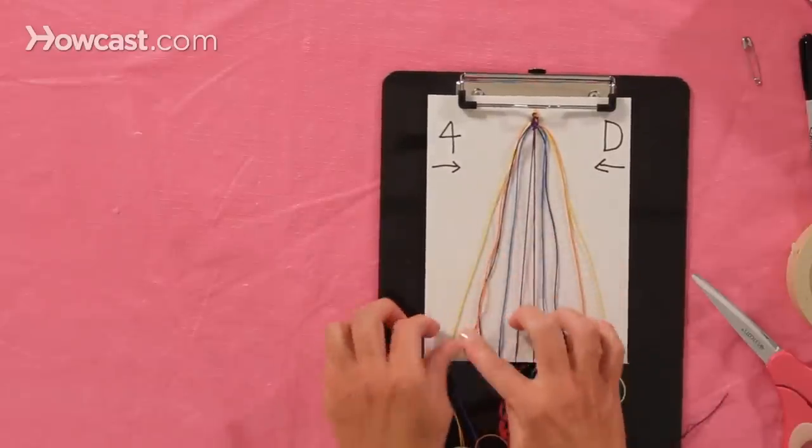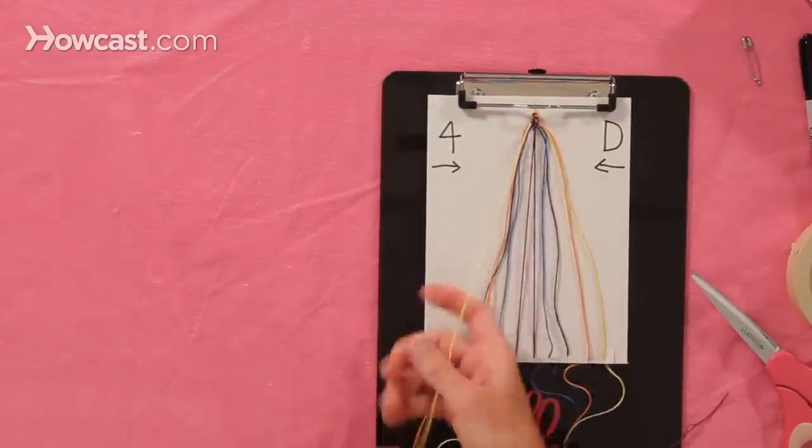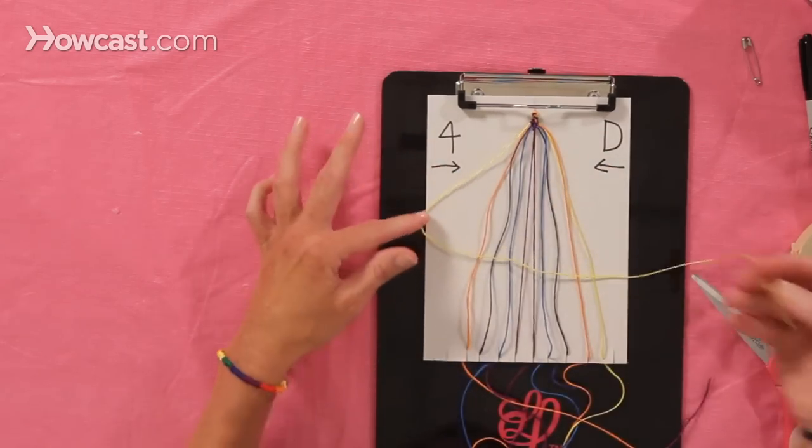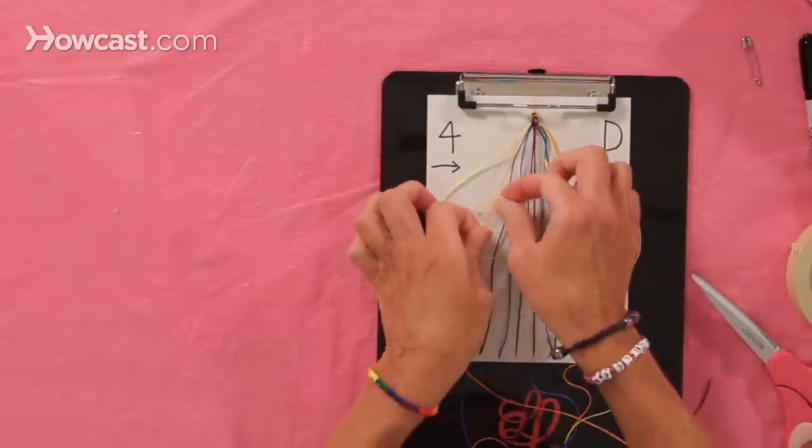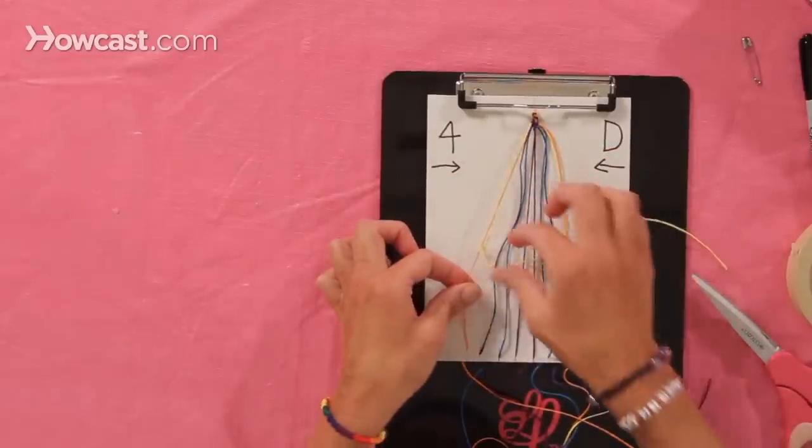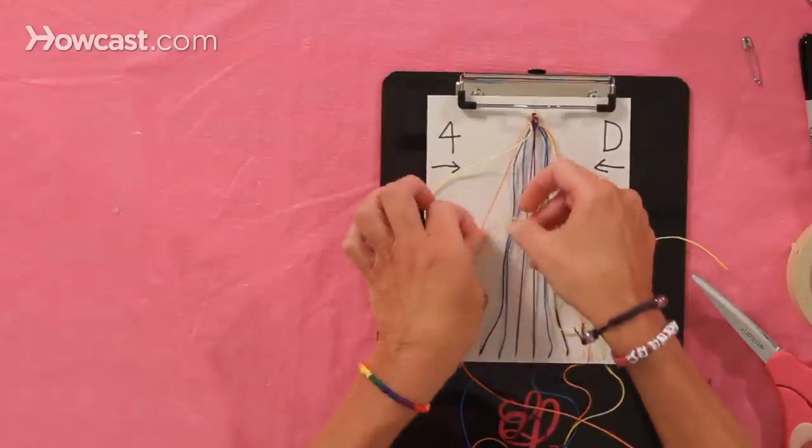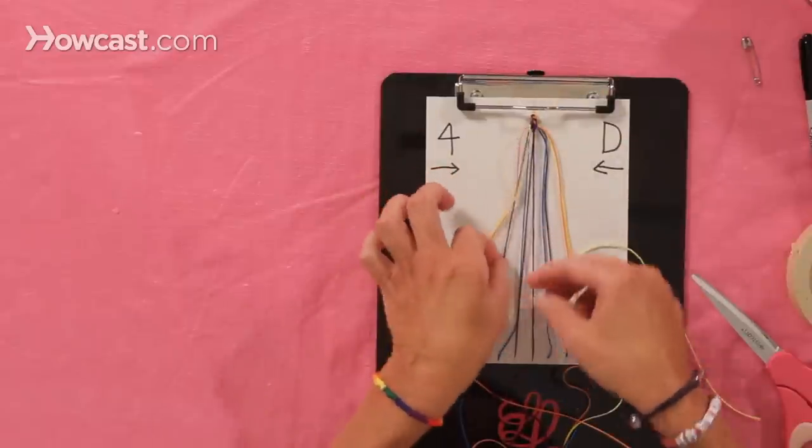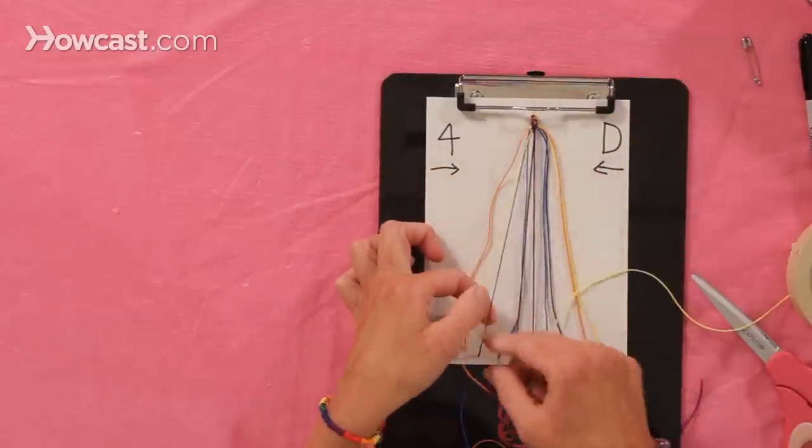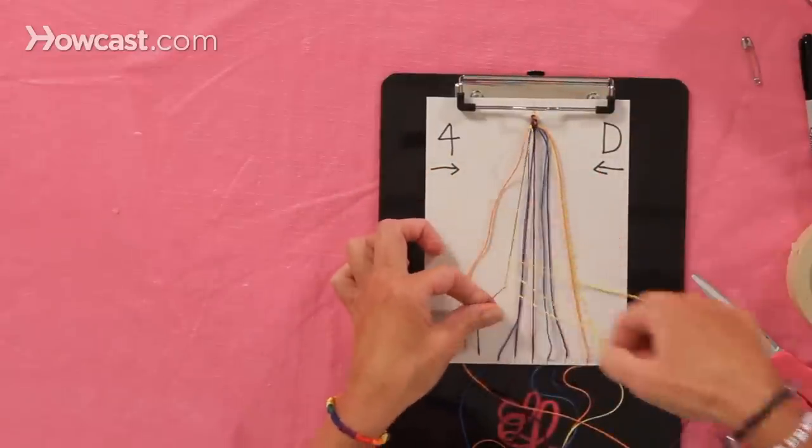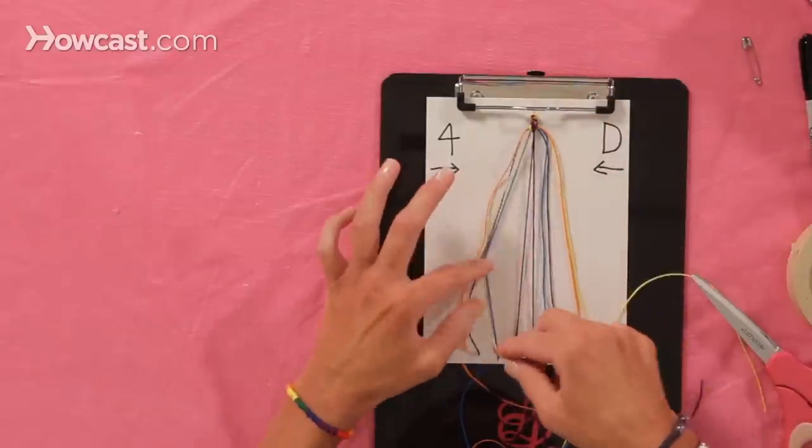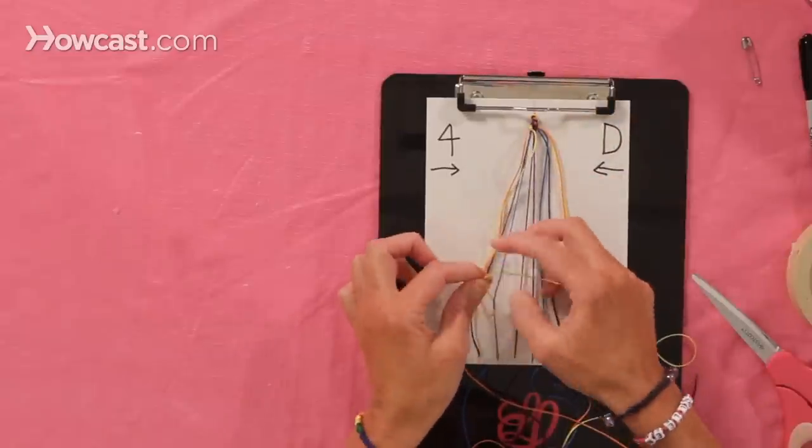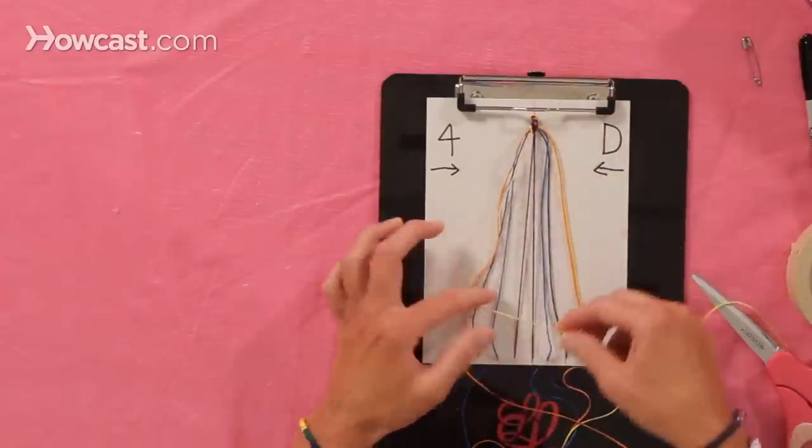And now we go back outside, and we do the same thing with the leftmost string, making the number four underneath, and you pull it up. Two on the blue, two on the royal, and now two on the purple.